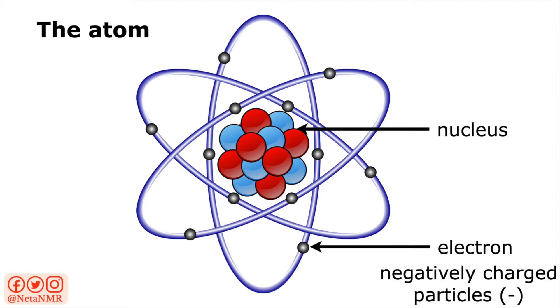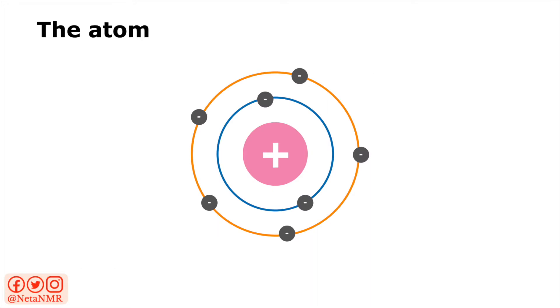To better understand what's happening in the atom, let's have a look at the schematic representation. Here we can see the positively charged nucleus. The positive charge comes from the presence of the positively charged protons inside the nucleus. The negatively charged electrons circling the nucleus are attracted by the positive charge of the nucleus, thus keeping the atom together. But how is it that the nucleus holds together if it's made up of positive and neutral particles? It's because of a force called the strong nuclear force that binds together the protons and the neutrons — but that's outside the scope of our topics here.